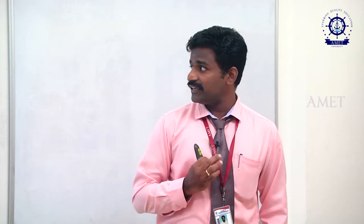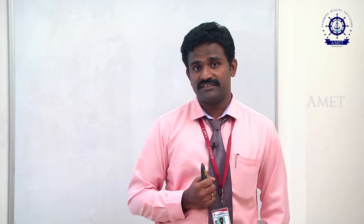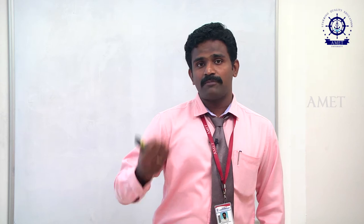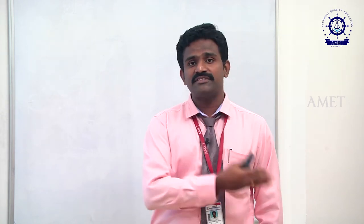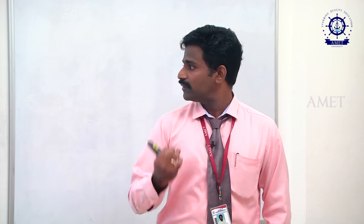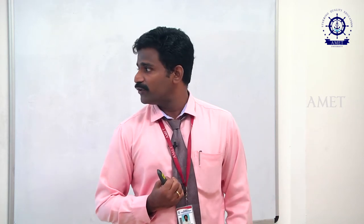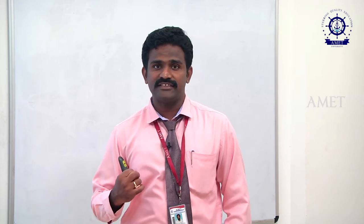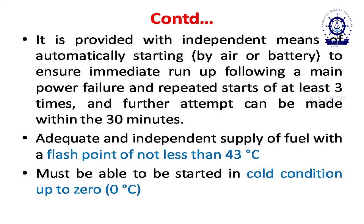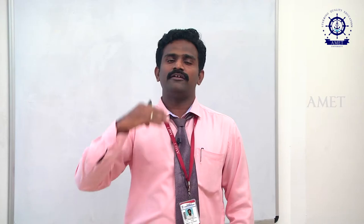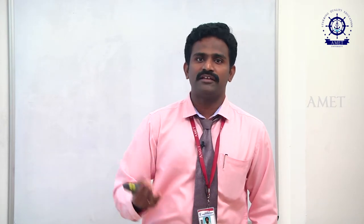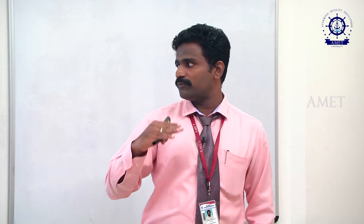Further attempts can be made within 30 minutes. When we have a power failure, we attempt to start the emergency generator at least three times. The fuel supplied to the emergency generator must have a flash point of not less than 40 degrees Celsius, because below that temperature it is not sufficient to start immediately. We must maintain the fuel flash point at not less than 40 degrees Celsius, and in cold conditions it must function down to 0 degrees Celsius.